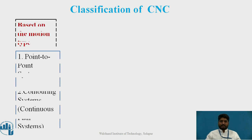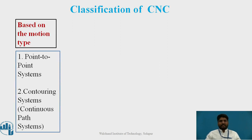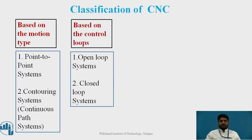Classification of CNC: The first classification is based on motion type. There are two types: the first is the point-to-point system, and the second is the contouring system, also called the continuous path system. The second classification is based on control loops. There are two types: open loop system and closed loop system.